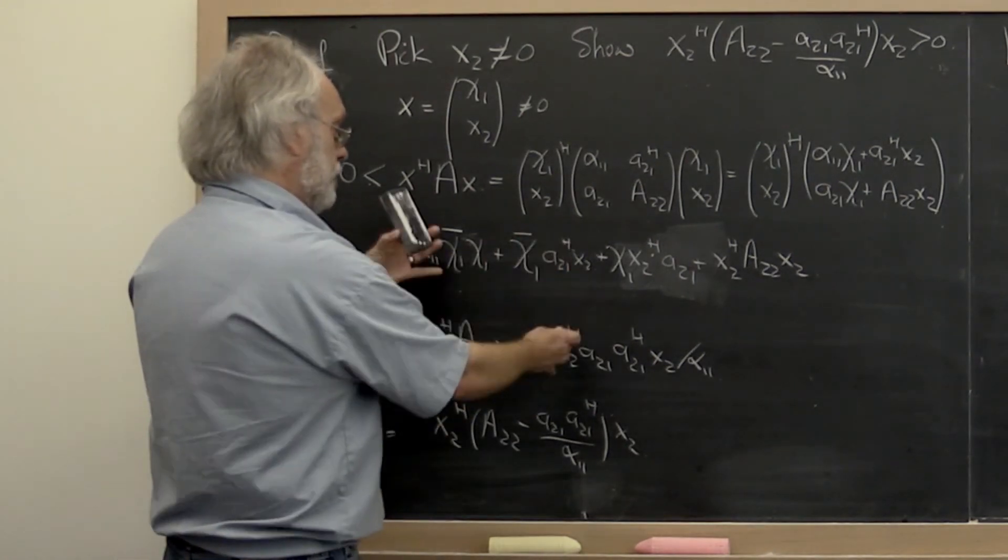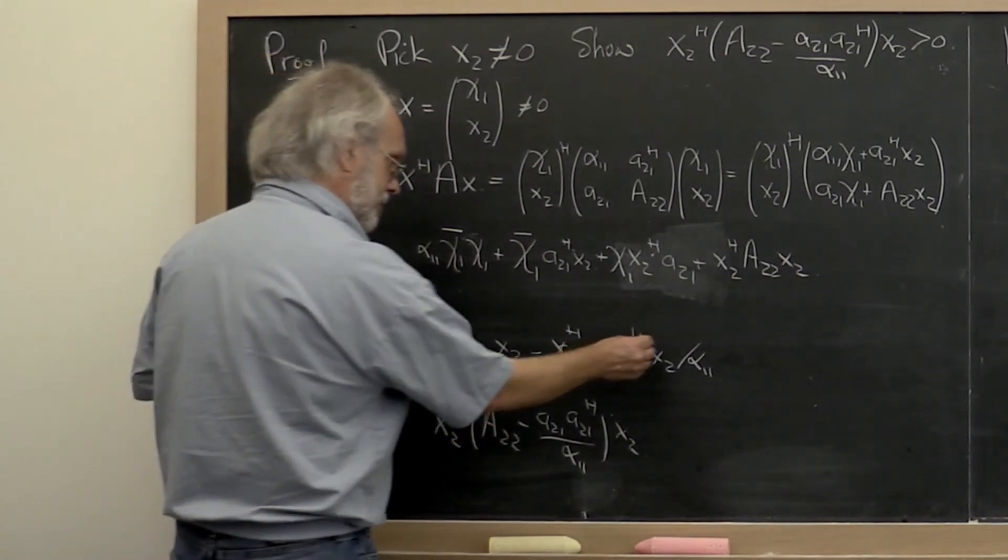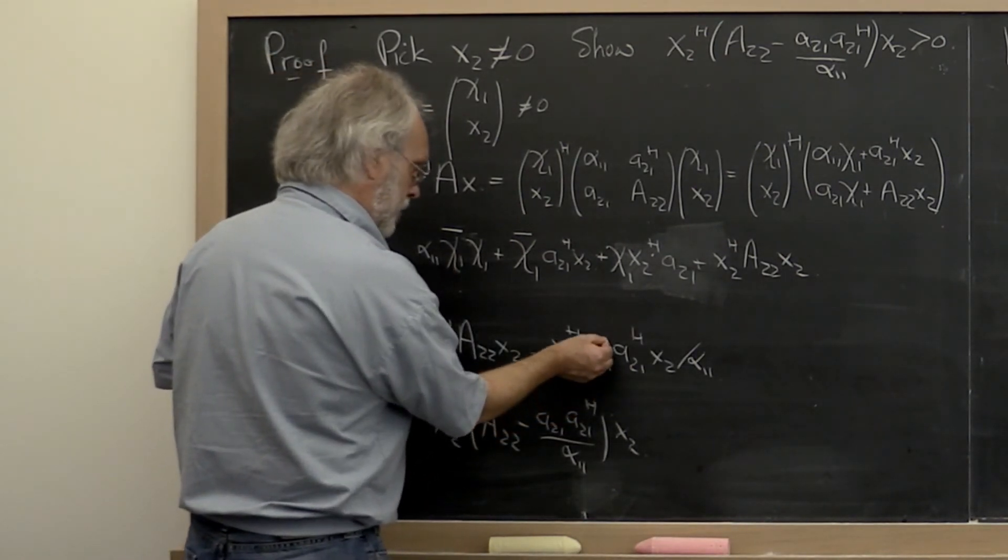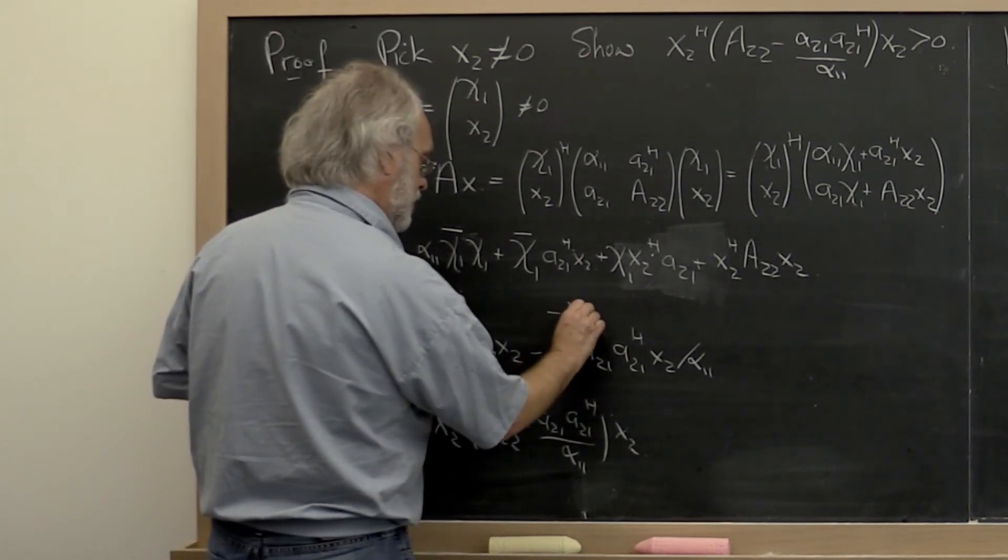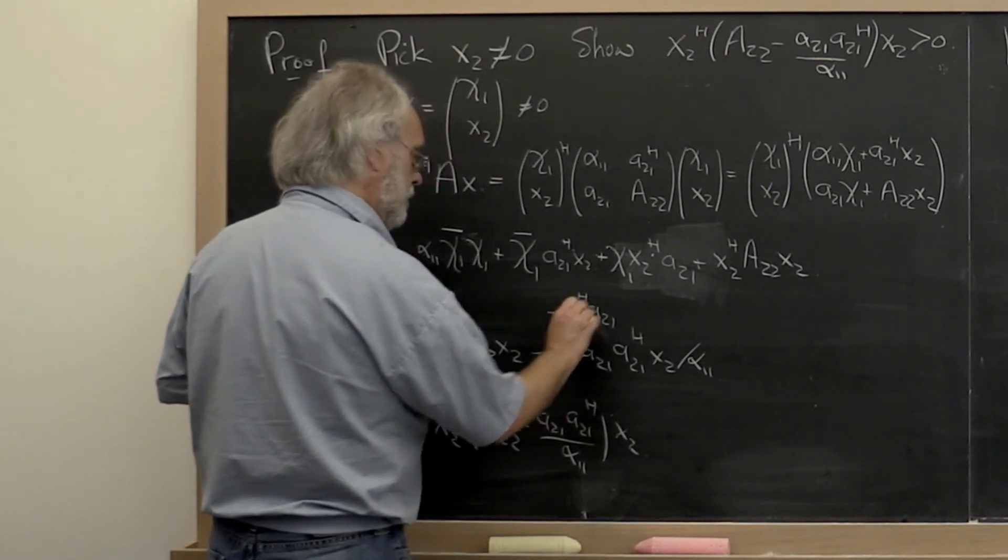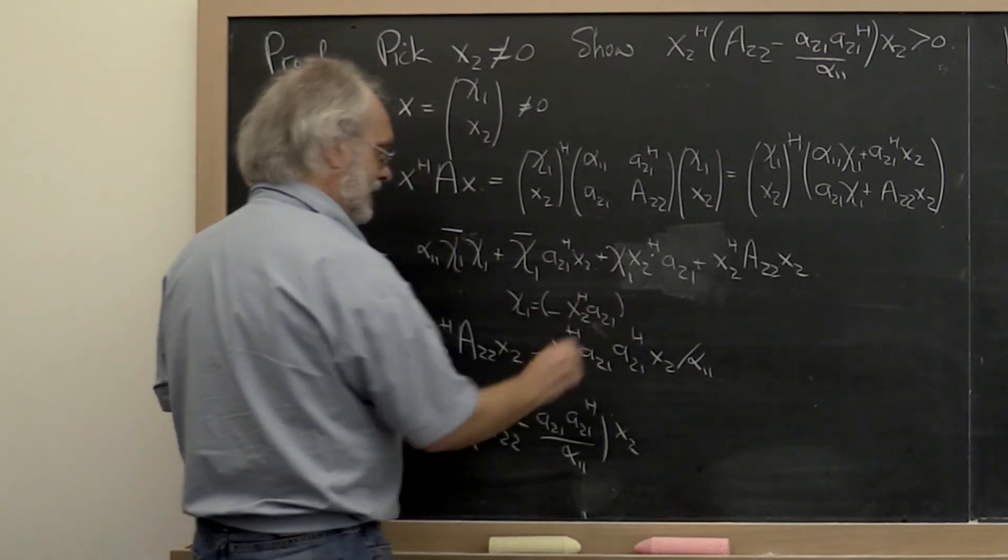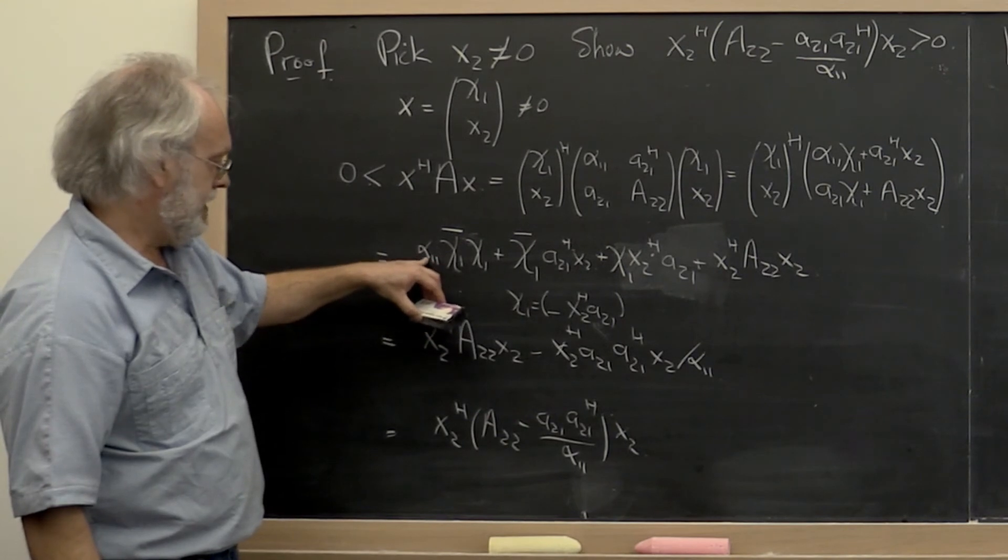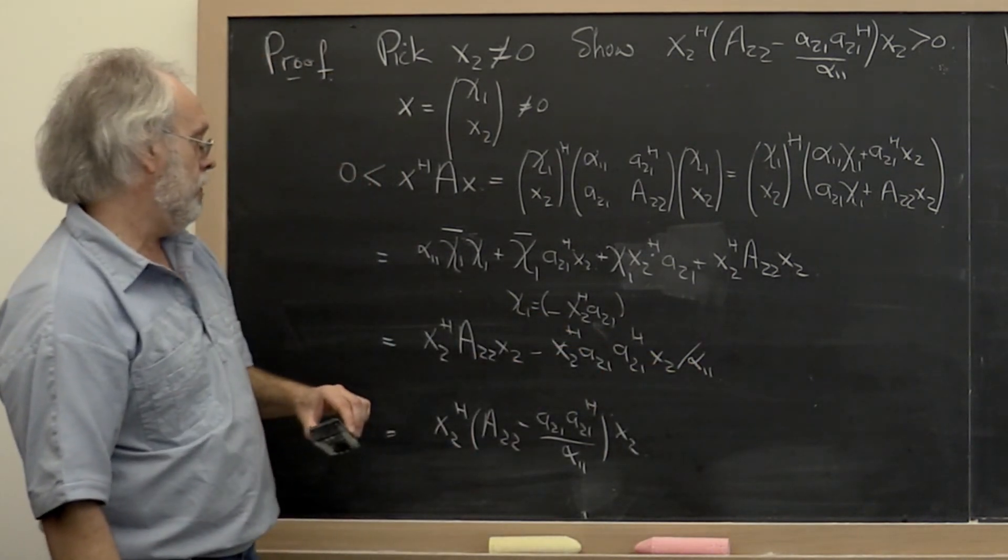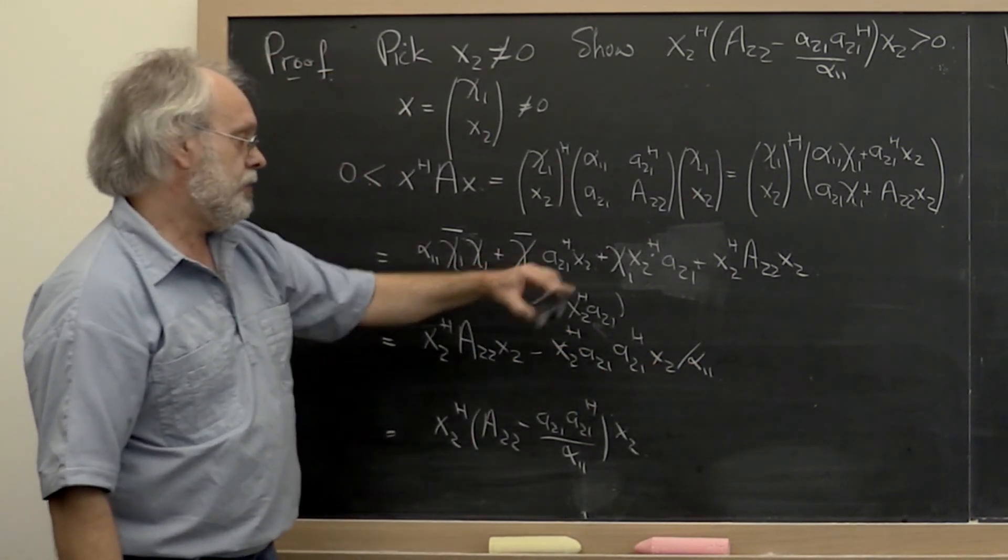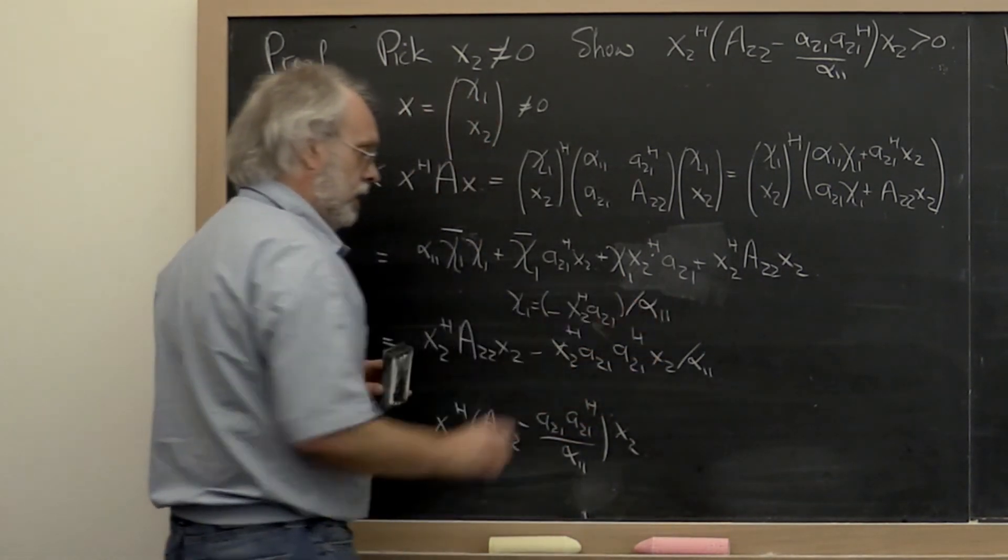Now, if you compare and contrast these things, what if we pick the negative of x2 times A 2 1, let's say x2 Hermitian transpose A 2 1 to be our chi 1. Then we get pretty close because then this here becomes exactly this except multiplied by alpha 1 1 and so forth. So maybe what we want to do is divide by alpha 1 1.